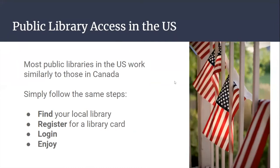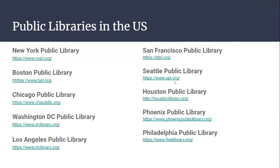For example, public library access in the U.S. Most public libraries in the U.S. work similarly to those in Canada. Simply follow the same steps: first, find your local library, then register for a library card, then log in and enjoy. Here is a list of a few public libraries in the U.S., for example the New York Public Library, San Francisco Public Library, and so much more.